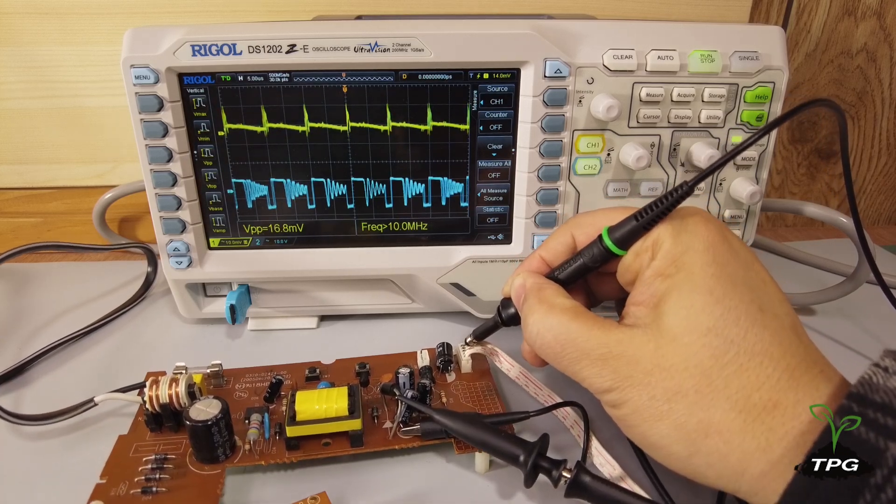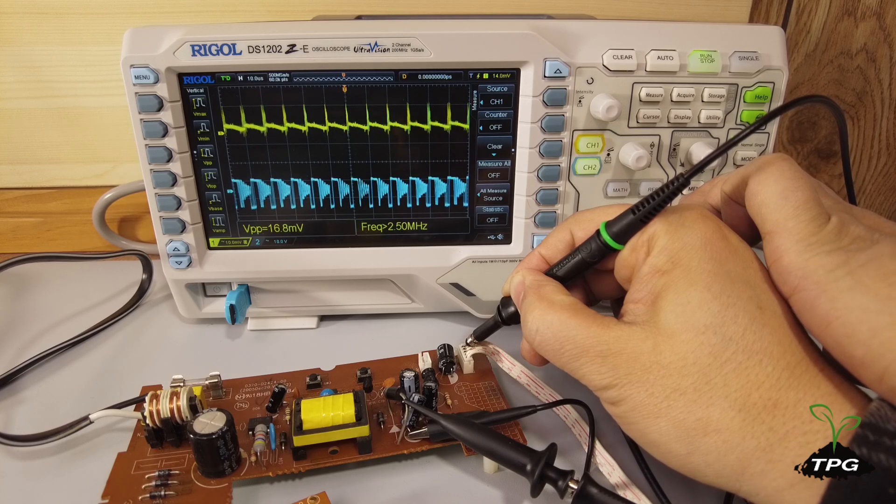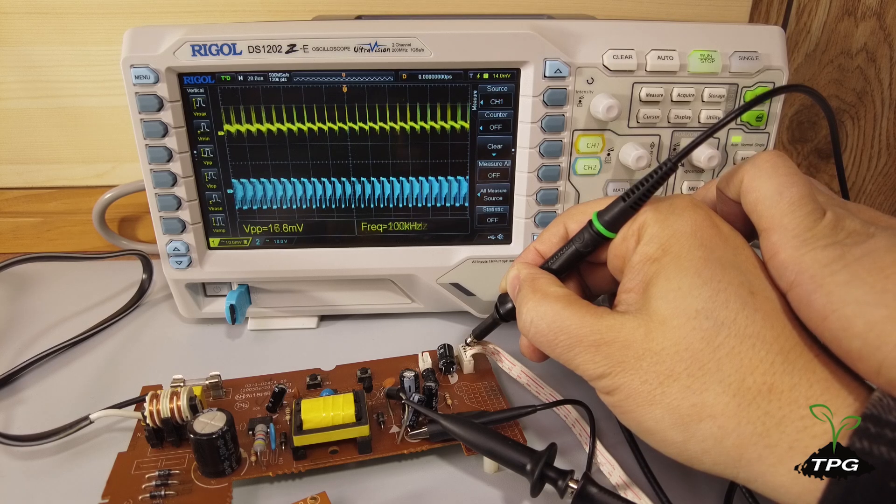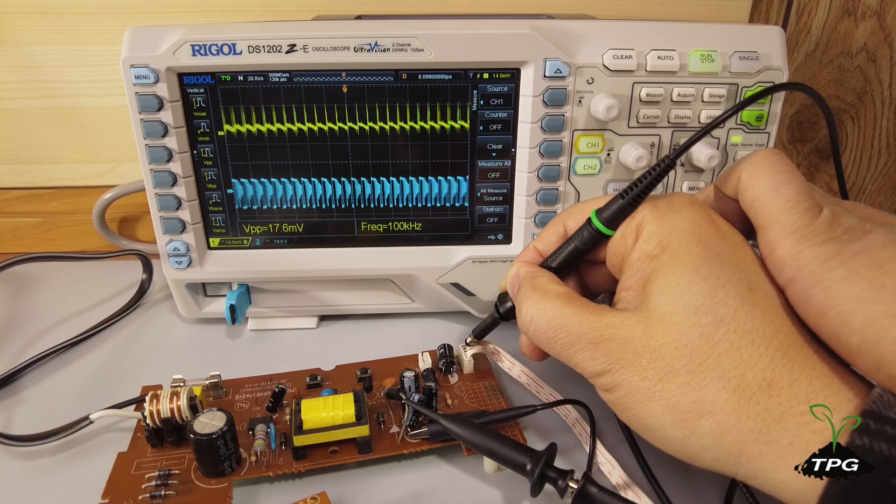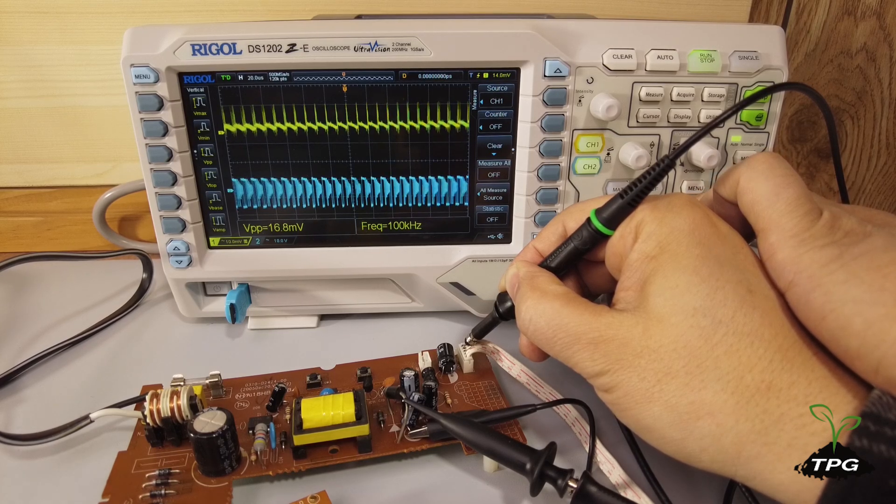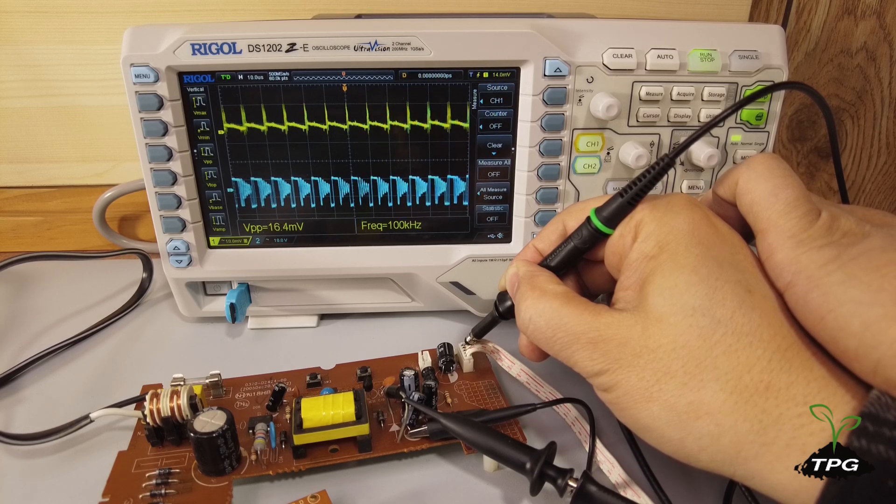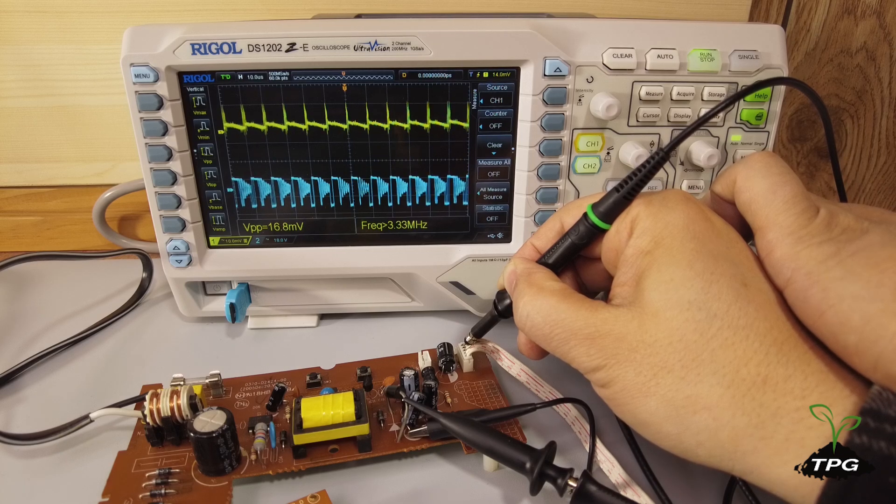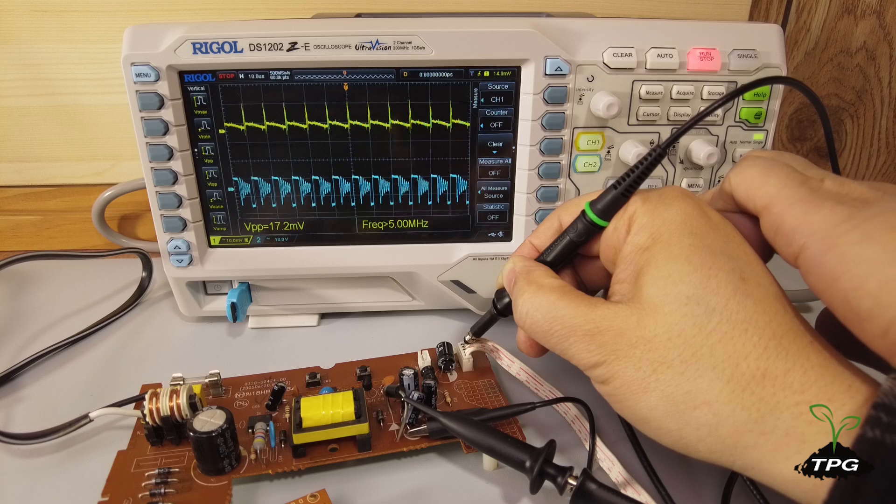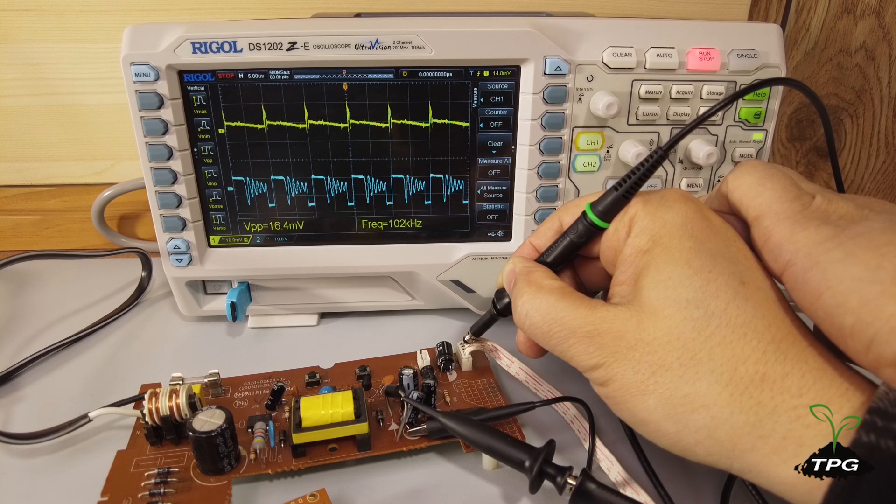The ripple voltage measures approximately 16 mV with the same frequency as the SMPS switching frequency, which is about 100 kilohertz in this case.